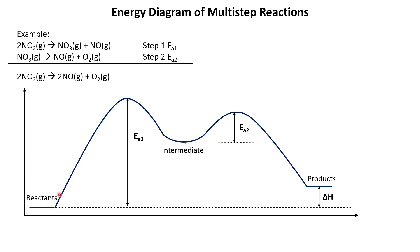Here we've gone from reactants to products across the full diagram. Our change in enthalpy, delta H, is still simply the energy of the products minus the energy of the reactants — it doesn't matter how many steps are involved. Remember, enthalpy is a state function — it's independent of the path.